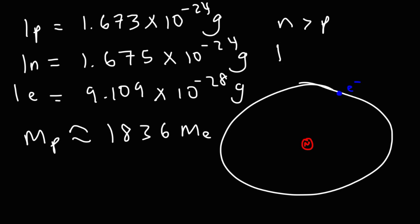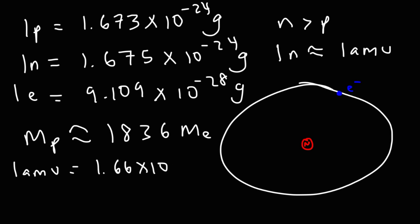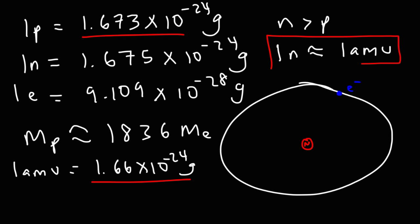A neutron is approximately one atomic mass unit (amu), and the same is true for a proton. One atomic mass unit is equal to 1.66 × 10⁻²⁴ grams. These numbers are not exactly the same, but you can say that one neutron has a mass of approximately one amu, and the same is true for a proton.